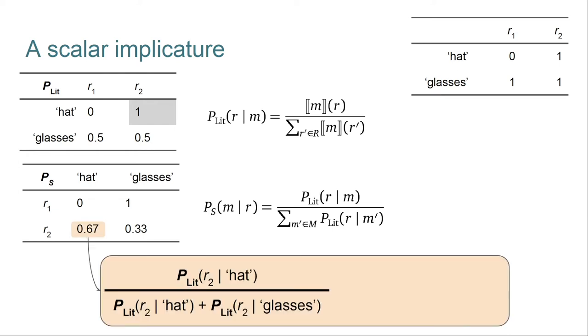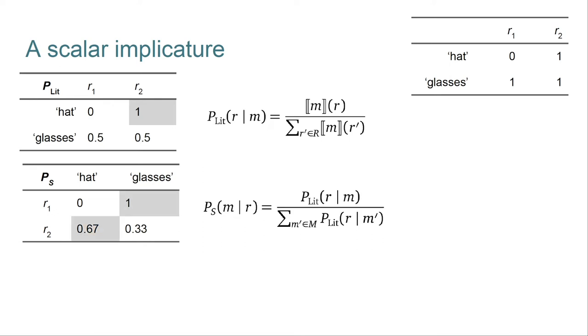So this speaker is very similar to P_lit, except that it reasons about the literal listener rather than about the truth conditions, and it chooses messages given referents rather than the reverse. Let's walk through another calculation. So using the model definition, we get the expression in the orange box. And then crucially, we look up the values not in the truth conditions, but rather in P_lit. Simple substitution and calculation then gives us the final value. So that's how that kind of calculation goes. Notice that this pragmatic speaker has broken the tie that the literal listener had for glasses. This comes from the fact that while the glasses row is even for the listener, if we think column-wise, like the speaker in effect does, then things are more imbalanced. And this is, I'd say, the speaker version of the scalar implicature that we're targeting.